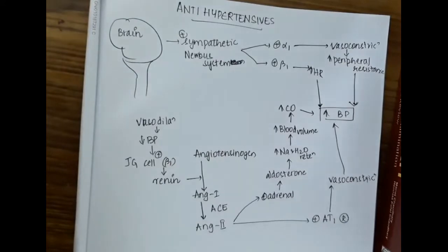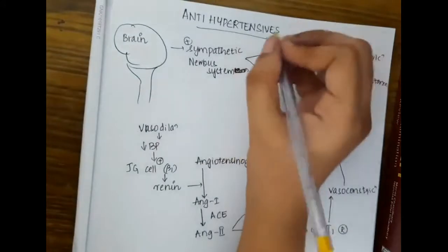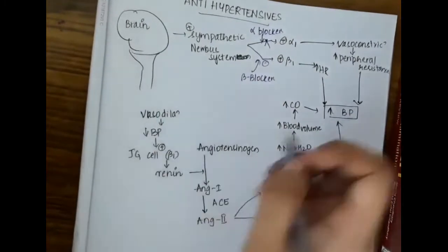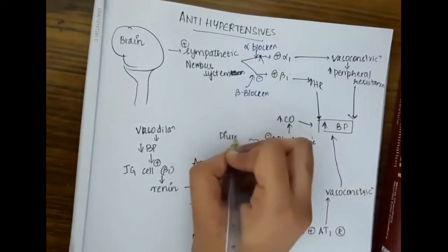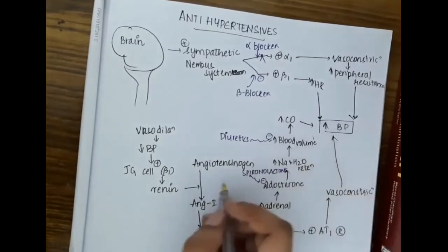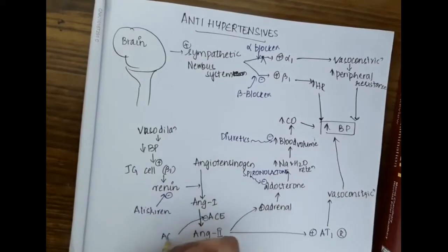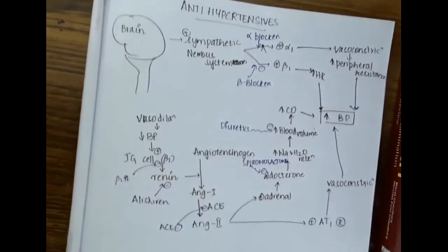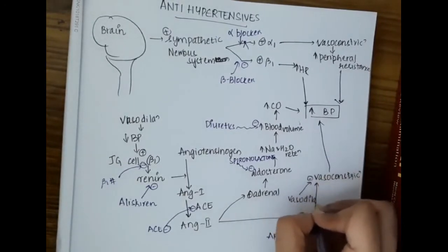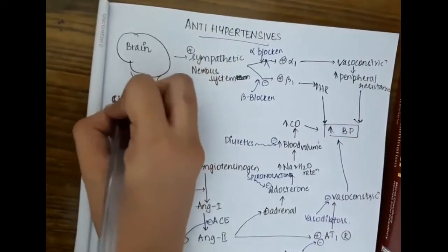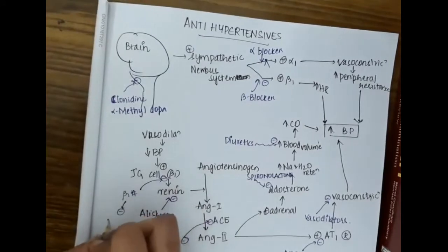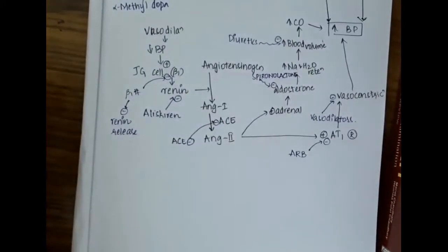This is the general regulation of BP. Drugs acting on these pathways include: alpha blockers which block alpha receptors; beta blockers which block beta-1 receptors; diuretics which inhibit the increase in blood volume; spironolactone which inhibits aldosterone; aliskiren which inhibits renin; ACE inhibitors which inhibit angiotensin converting enzyme; angiotensin receptor blockers which inhibit AT1; vasodilators which inhibit vasoconstriction; and clonidine and alpha-methyldopa which inhibit central sympathetic alpha-2 auto-receptors.